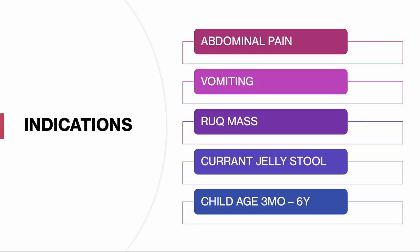Indications for this study include abdominal pain, vomiting, a right upper quadrant mass, currant jelly stools, and a child between ages three months to six years. We see a peak incidence between 10 to 14 months of age, and about 65% of patients present under the age of one. It's a very common etiology of bowel obstruction in children, but relatively rare in adults, accounting for only about one to three percent of obstruction cases. Delayed diagnosis leads to increased bowel wall edema, ischemia, and bowel perforation, making surgical intervention more likely. With advanced imaging modalities, mortality has been reduced to less than one percent.